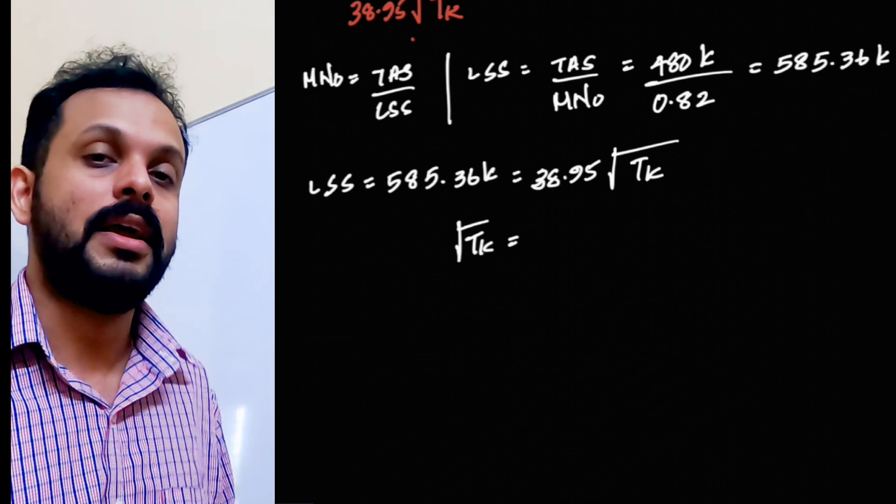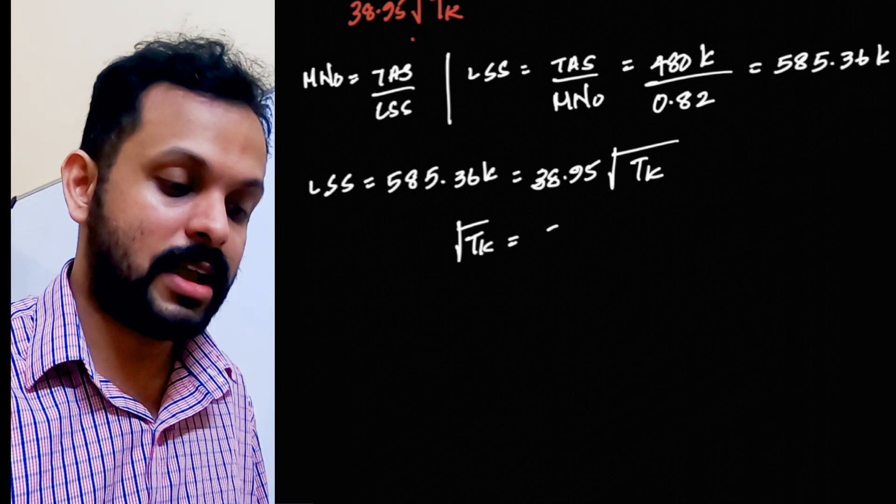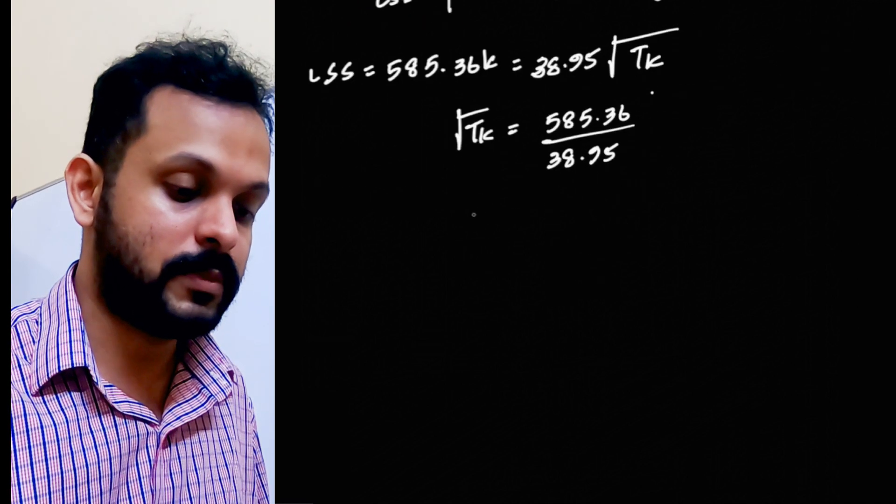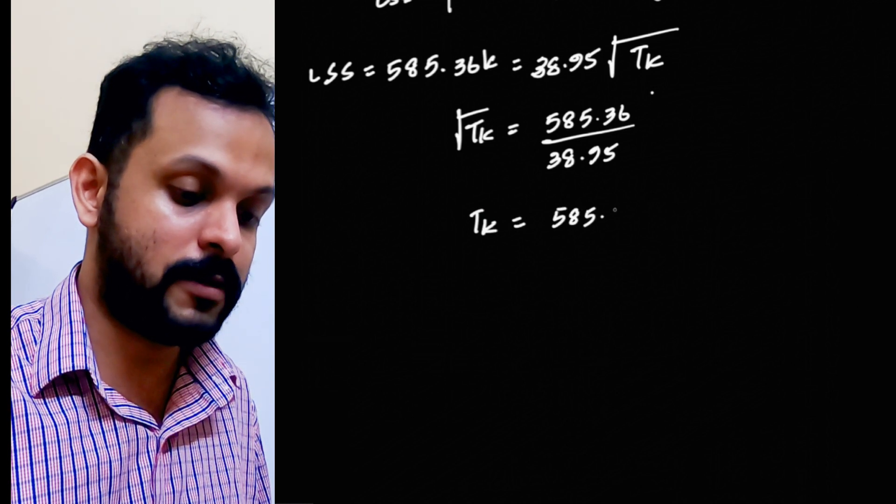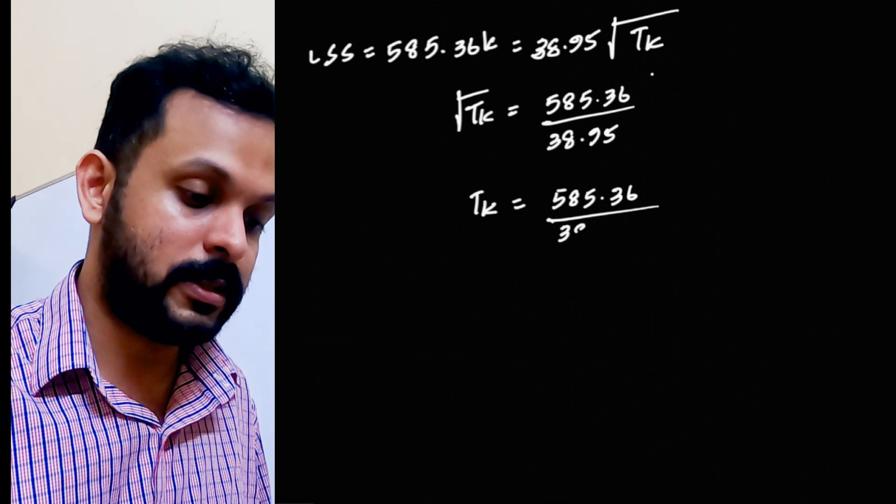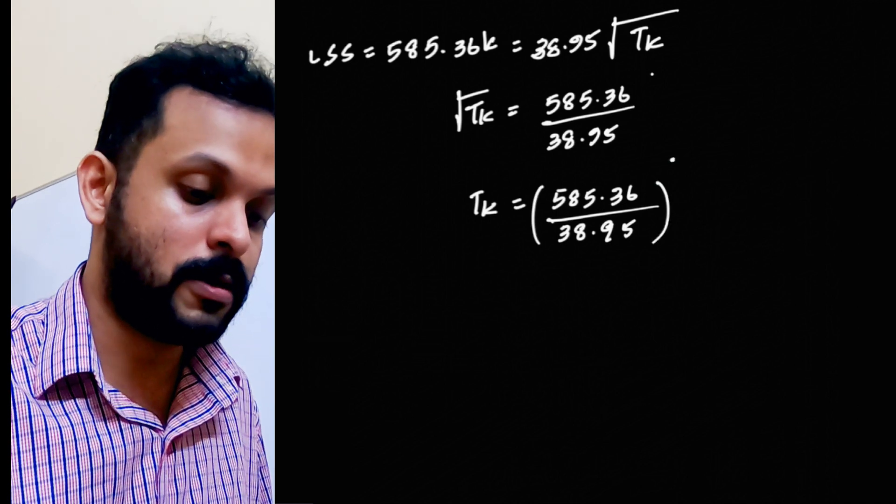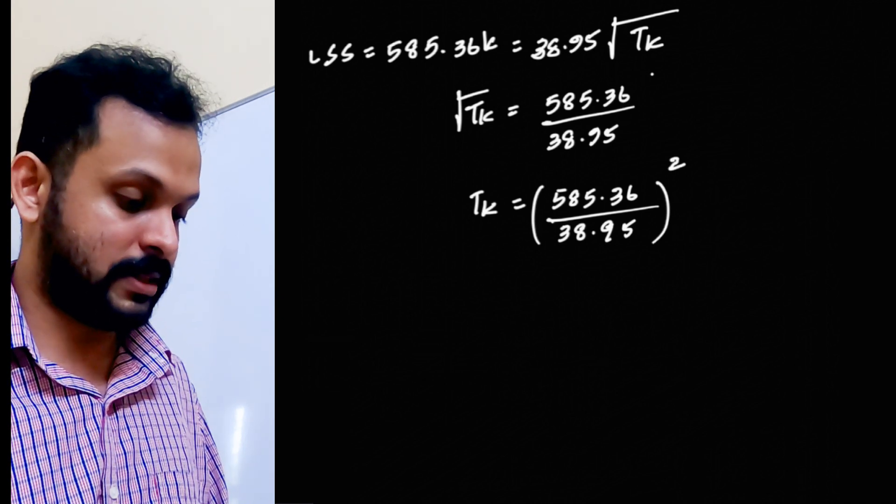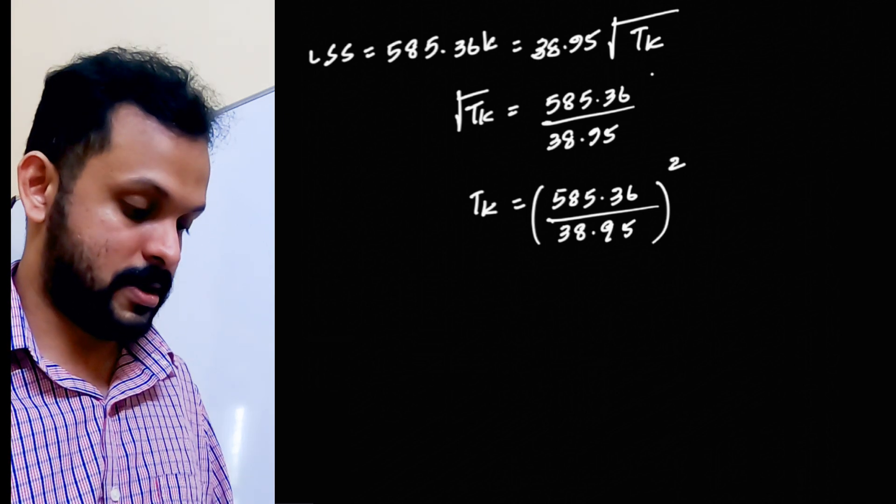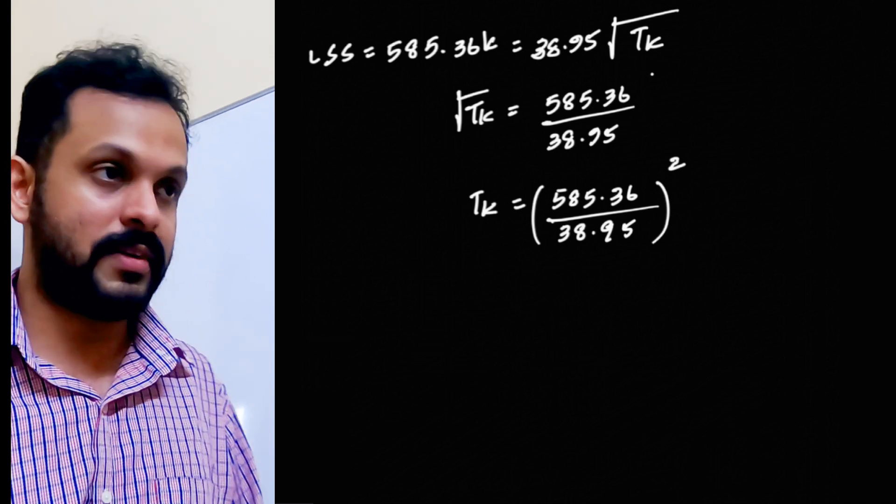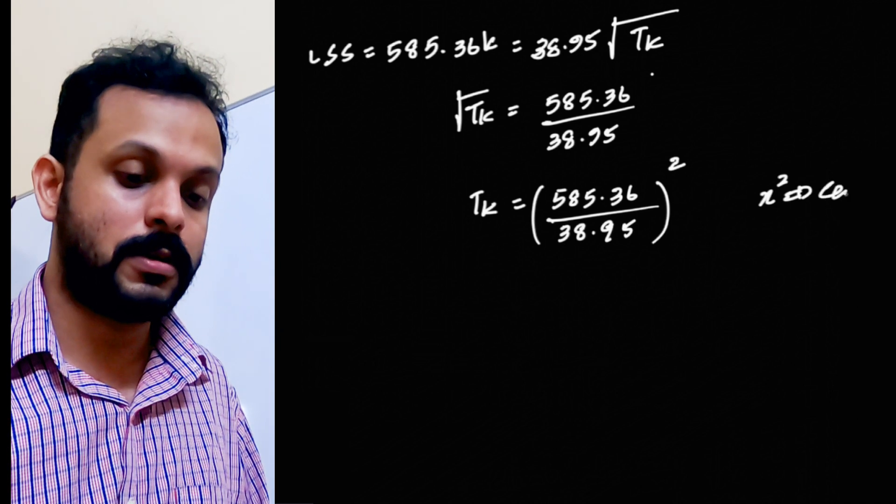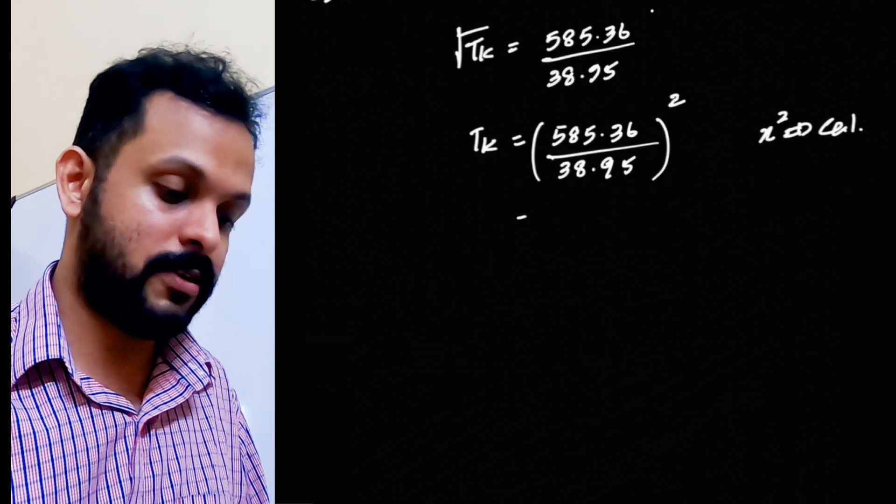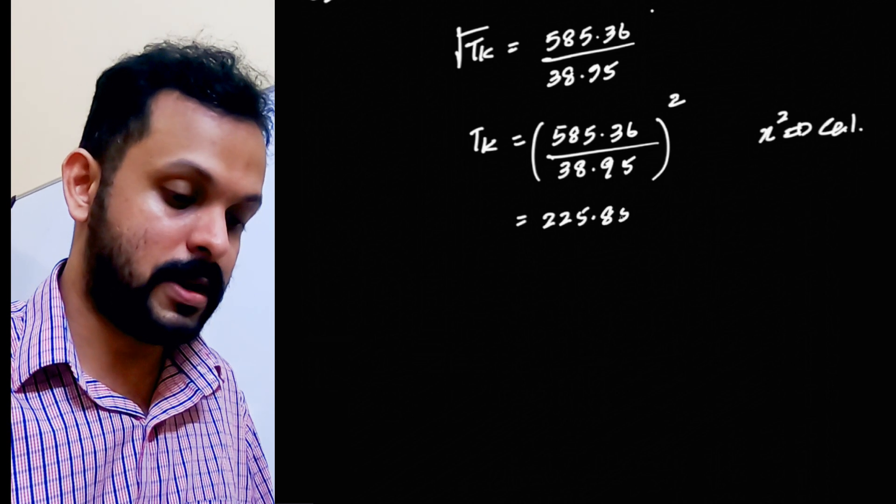Now, I would really prefer to explain the individual steps of this because I know there are at least 10% of you out there who struggle to solve linear equations, equations with one variable. Root of temperature in Kelvin is 585.36. The 38.95 goes to the denominator. Therefore, temperature in Kelvin is equal to 585.36 divided by 38.95, the whole square. I hope so much of a step is clear to you. Let's find this out. 585.36 divided by 38.95 and then square of that. We have an x square function which is available in your calculator, in a scientific calculator.